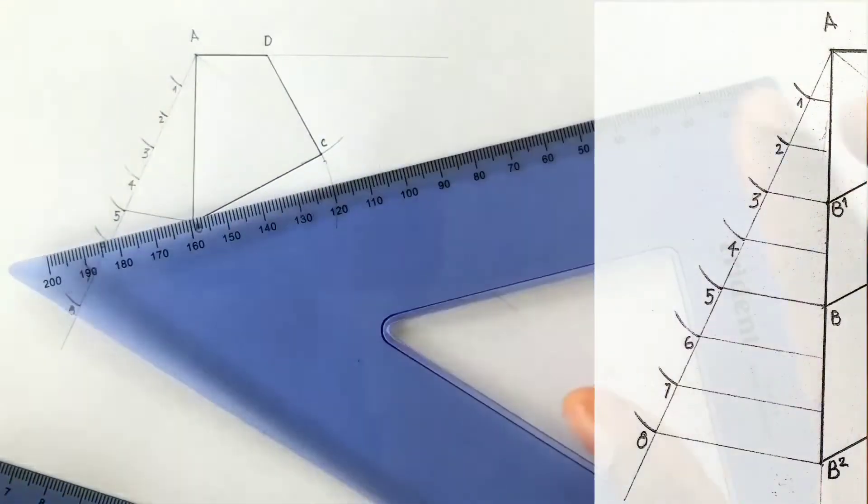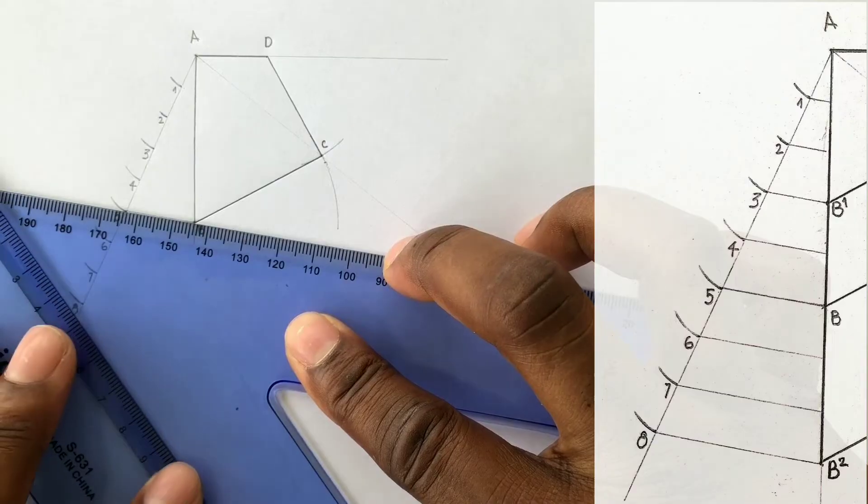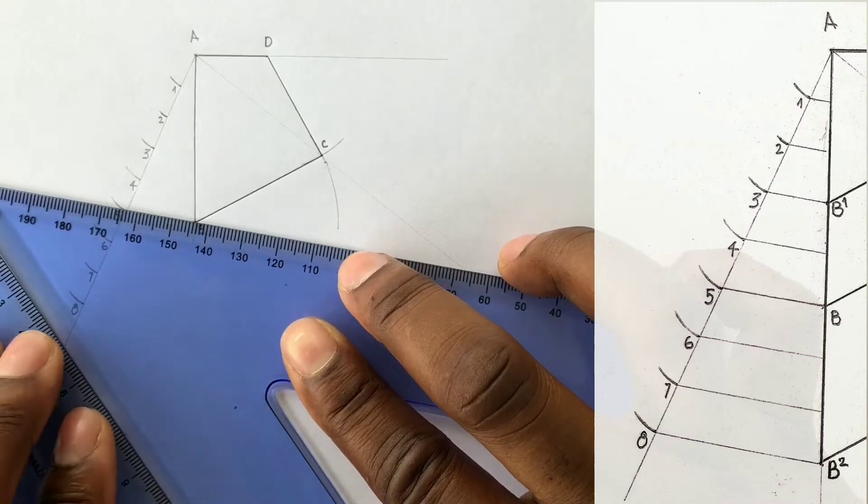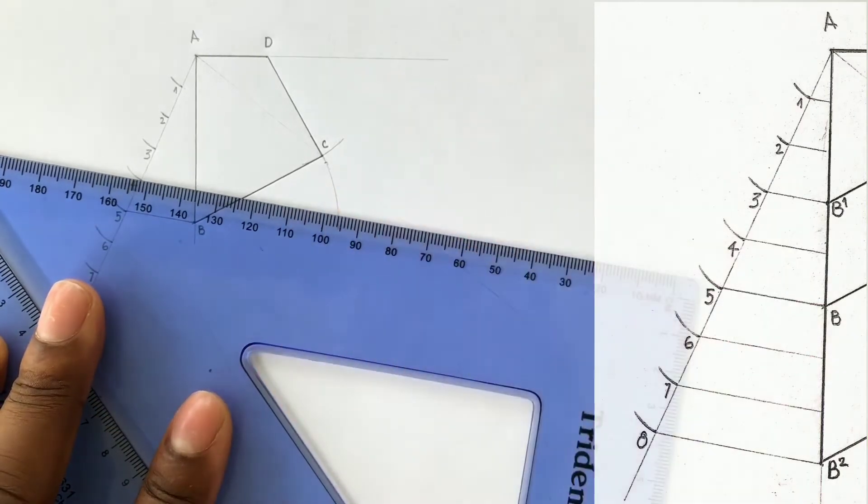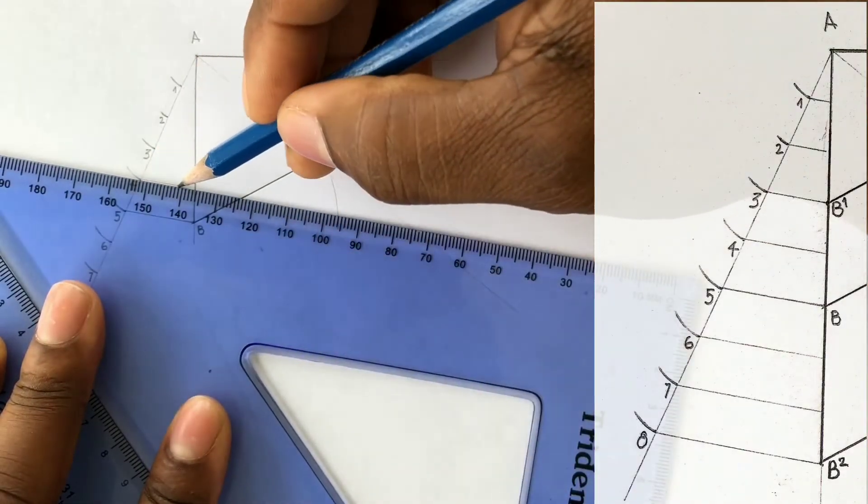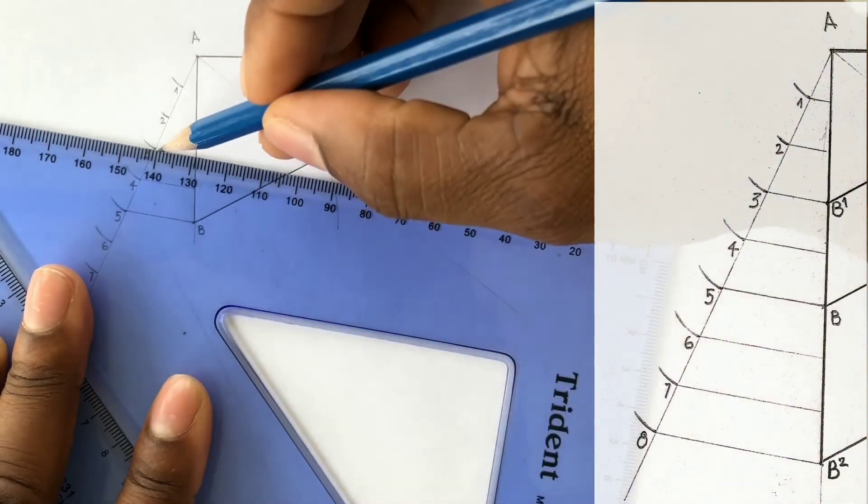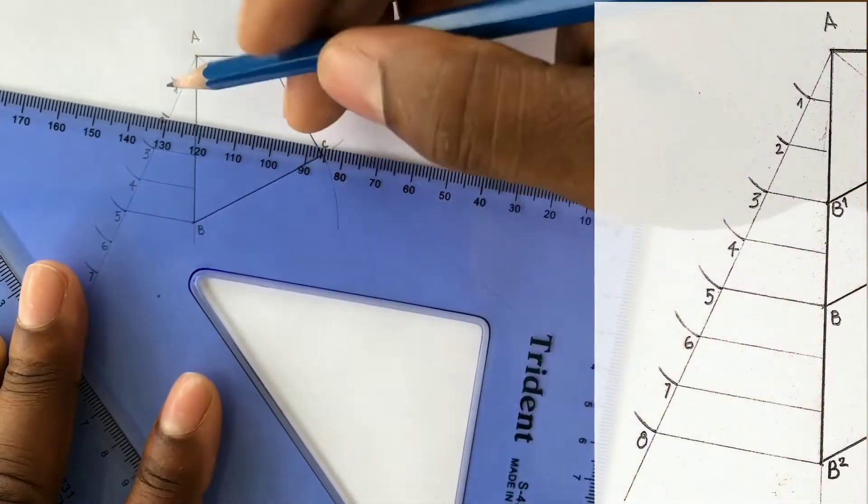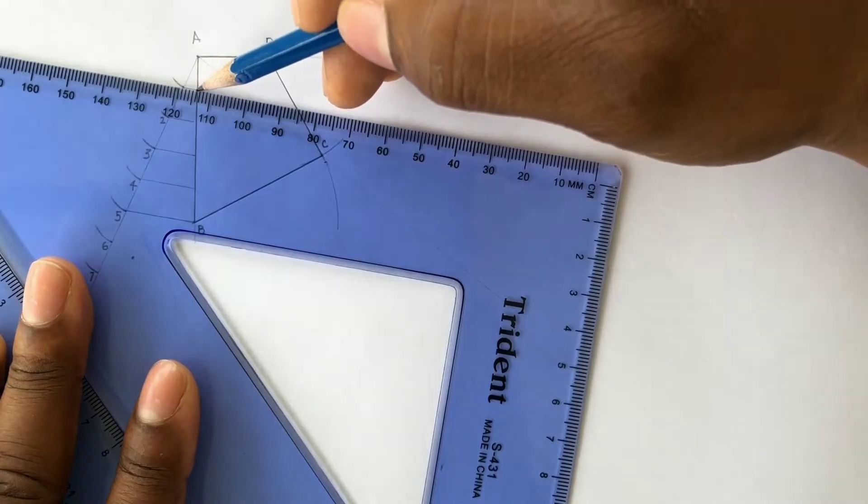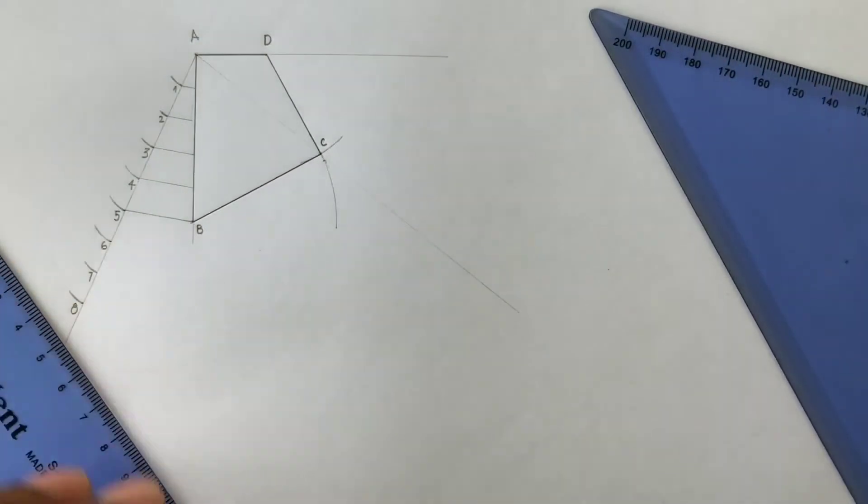Now place a set square along the line you last drew. And with a second set square under the first set square, you will draw parallel lines from point 4, 3, 2, and 1 to touch the AB line. For this to be accurate, the set square in your left hand must not move. You have just divided the length of side AB into 5 equal parts.